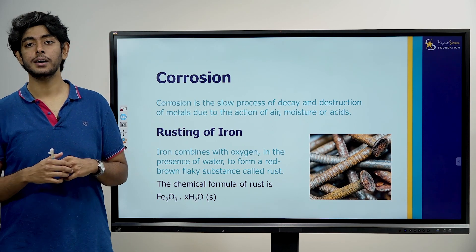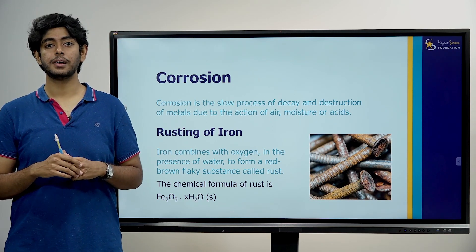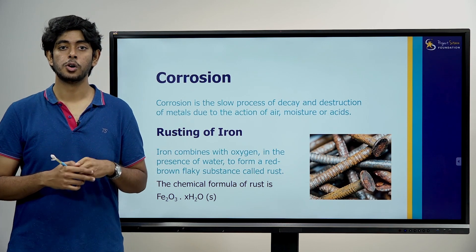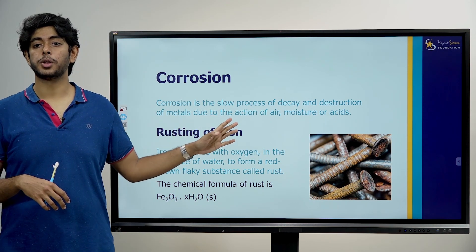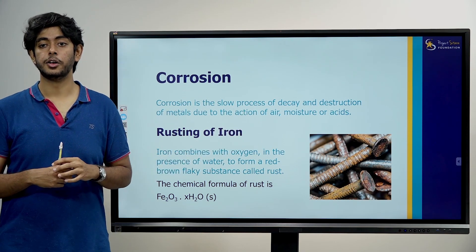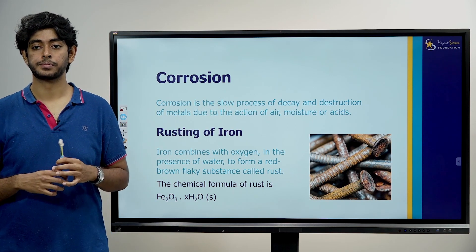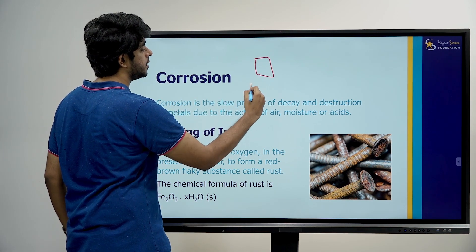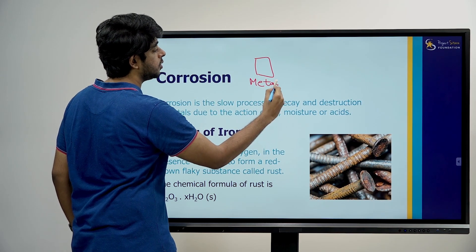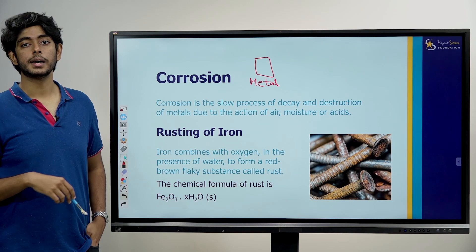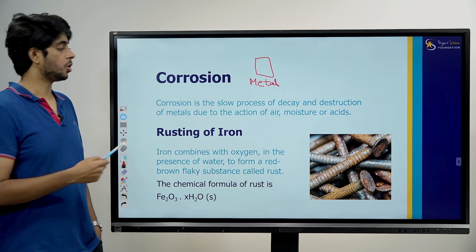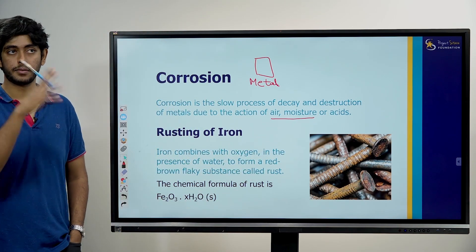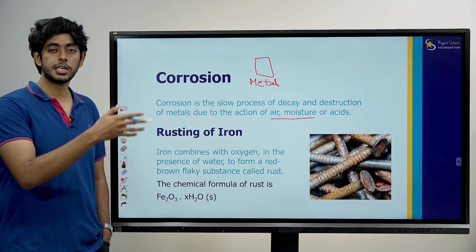The first reaction is very common — we use it daily. It's what we call corrosion. Corrosion is the slow process of decay and destruction of metal due to the action of air, moisture, or acids. When a metal decays slowly, we call it corrosion. Corrosion happens due to air and moisture — moisture means water vapour in the atmosphere — or acid.